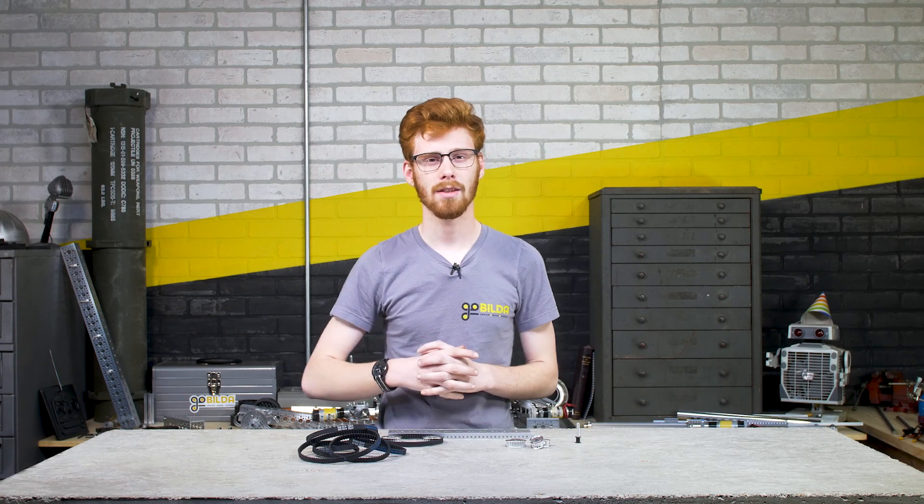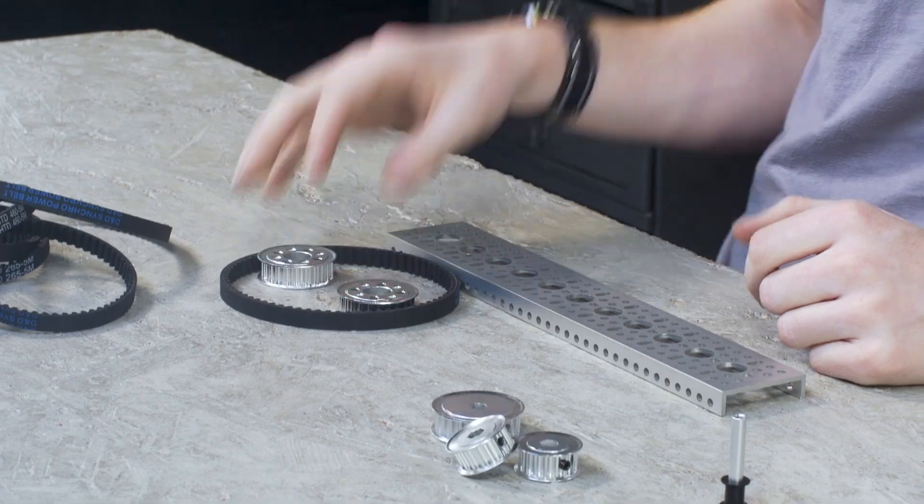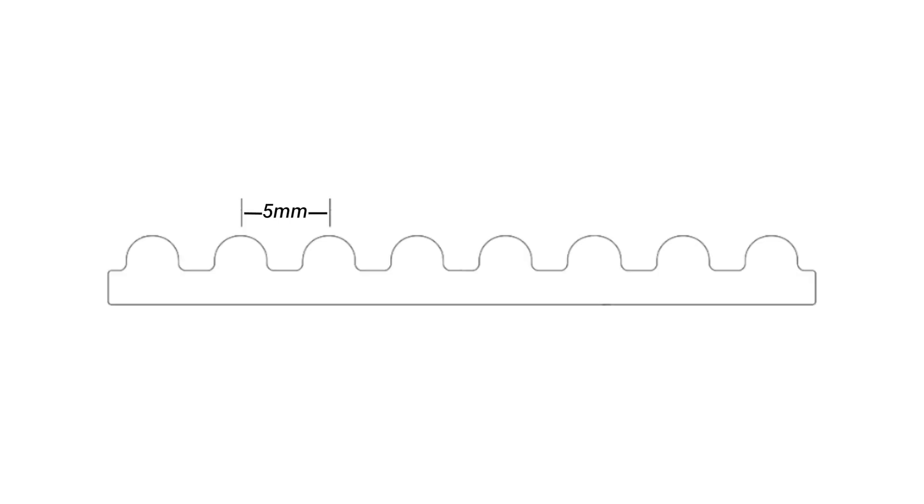So the big factors that indicate the length of belt that you need are the center distance, size pulleys you've got, and the pitch of the belt. The pitch of a belt is just the distance between any two of its teeth.